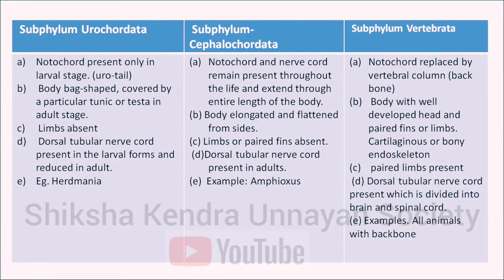In subphylum Urochordata, notochord is present only in the larval stage. The body is bag-shaped and covered by a tunic or test in the adult stage. Limbs are absent. The dorsal tubular nerve cord is present in the larval form and reduced in the adult form. Example: Herdmania.